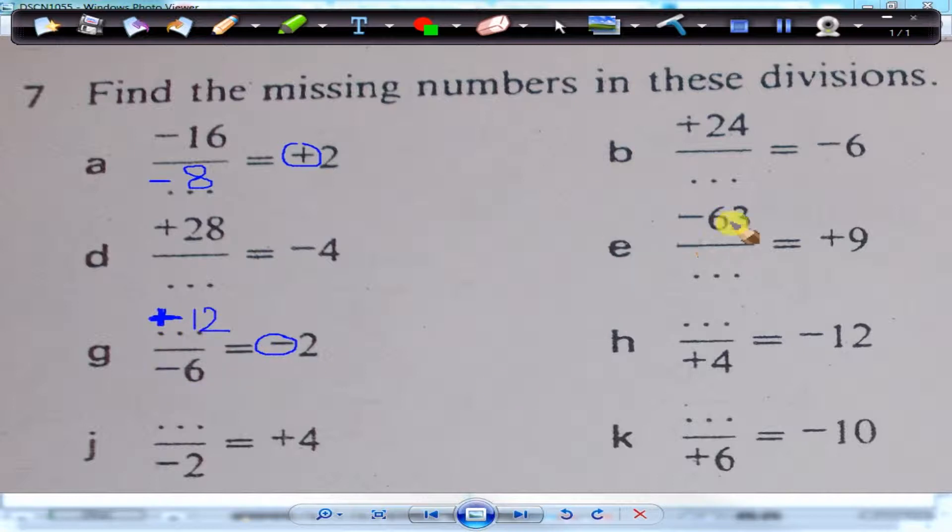Over here, folks, we have a plus answer indicating the same signs in the question, so it's going to be another minus. So, minus 63 divided by minus 7 will give us plus 9.